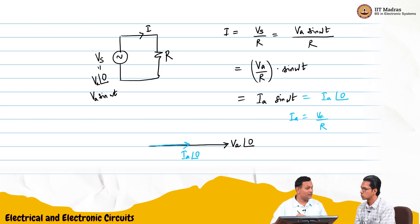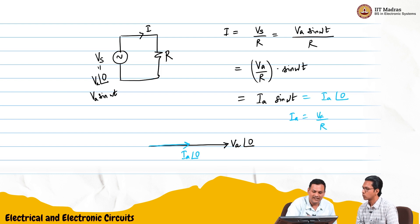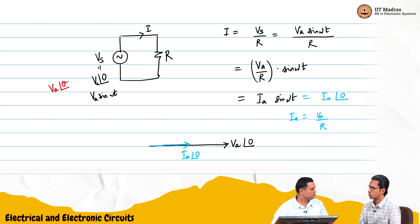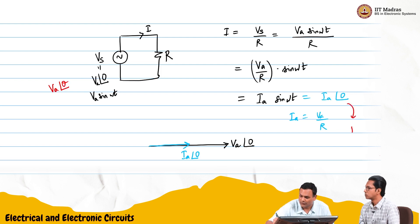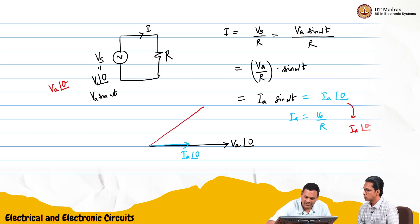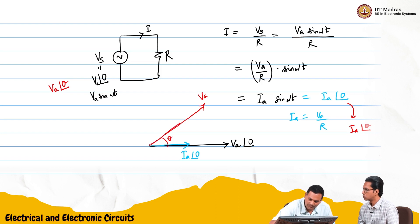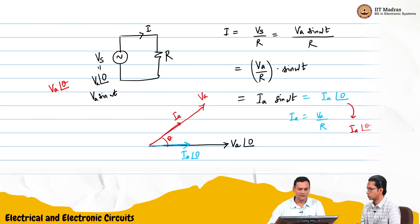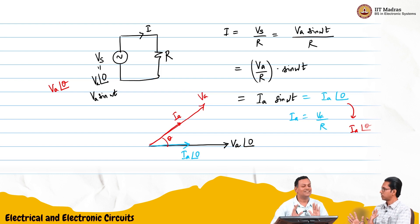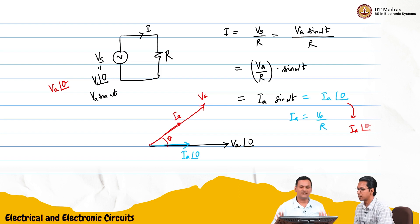Now I can go to the next level. If instead of V_a∠0 I had excited it with V_a∠θ, then the current would also be I_a∠θ. Both phasors would be at the same angle θ. Since we assumed V_a sin(ωt) as the reference, it is V_a∠0. Basically, there is no phase difference between voltage and current in the resistor case.